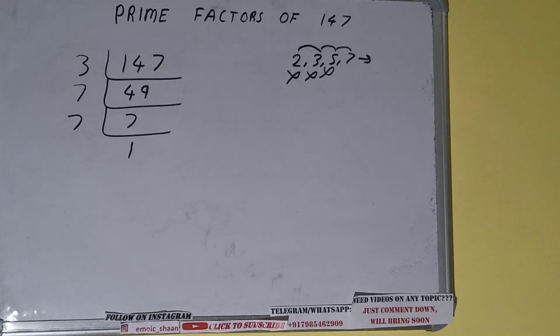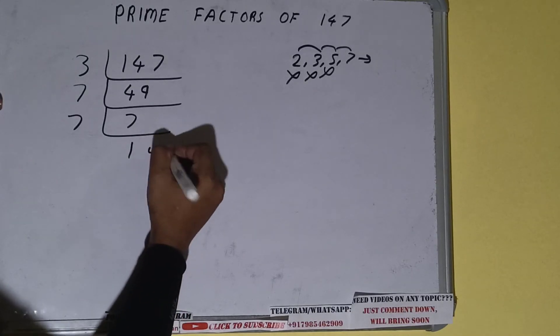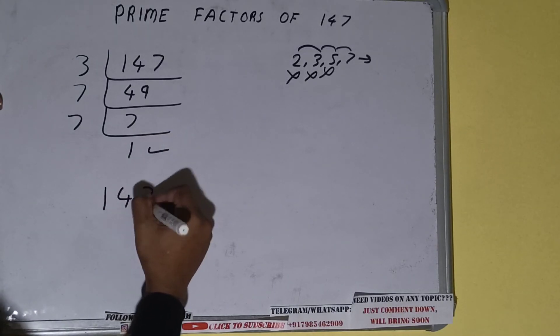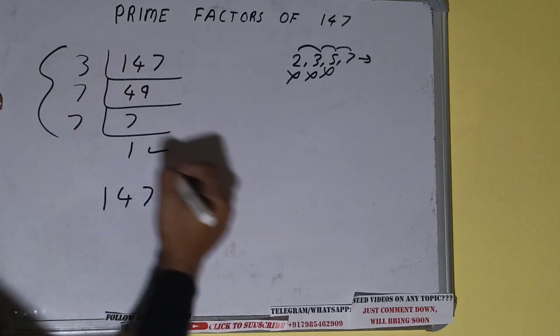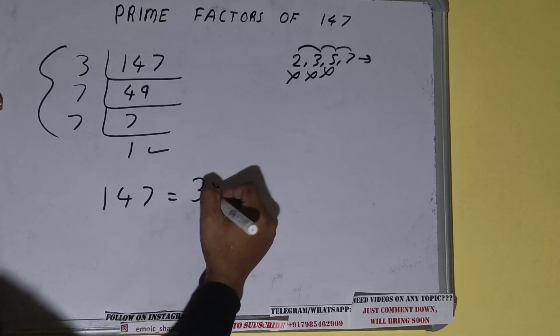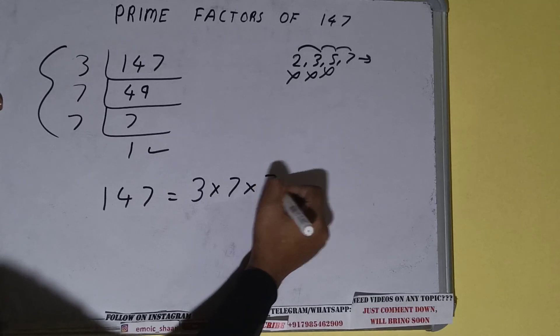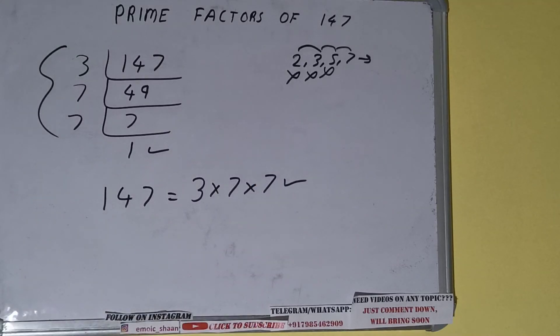7. We'll be getting 1. Once we get 1, we need to stop and do one last thing, that is: prime factors of 147 will be whatever we have on the left-hand side, that is 3 × 7 × 7. That would be the answer. So this is all about prime factors of 147.